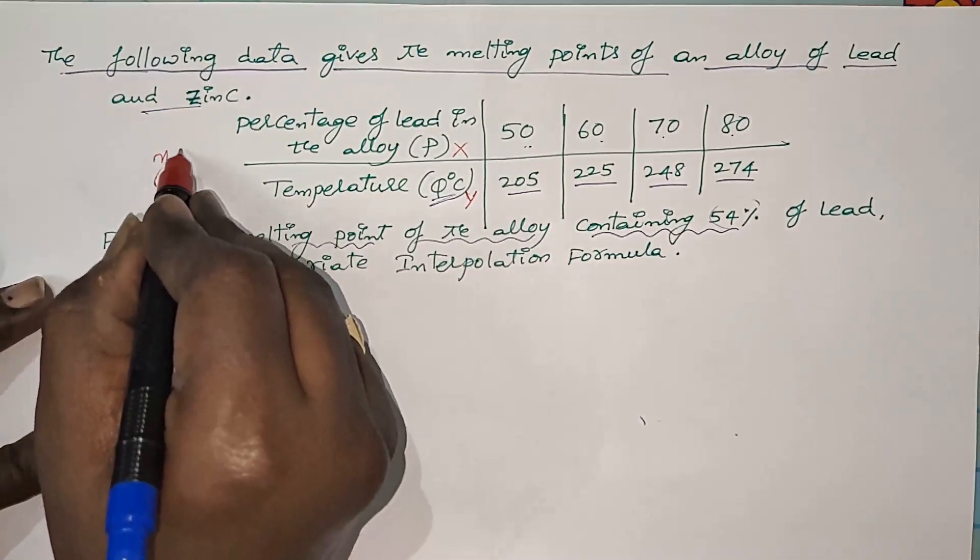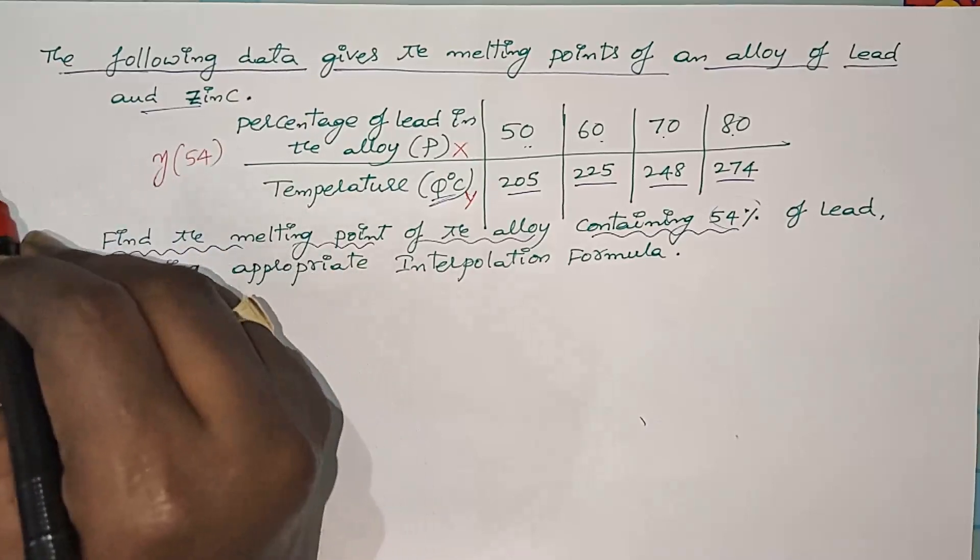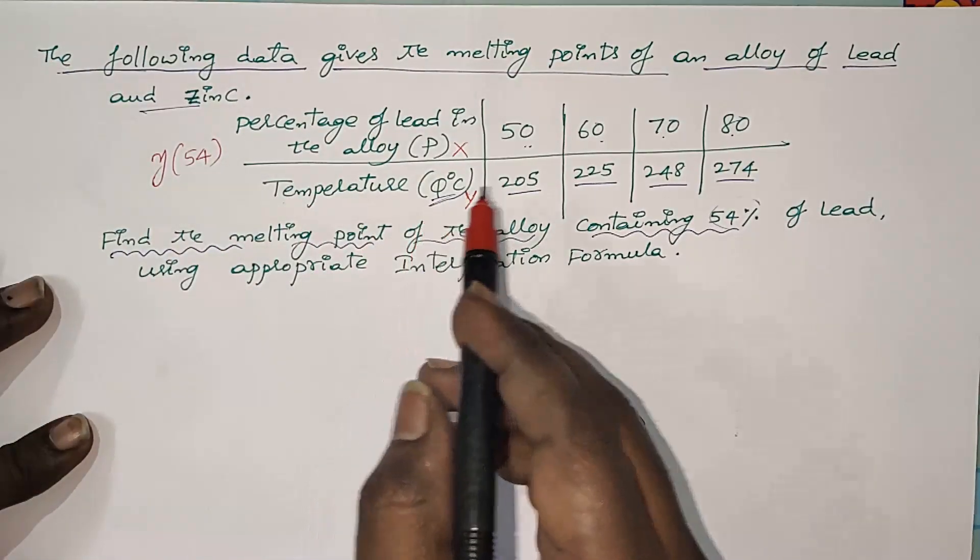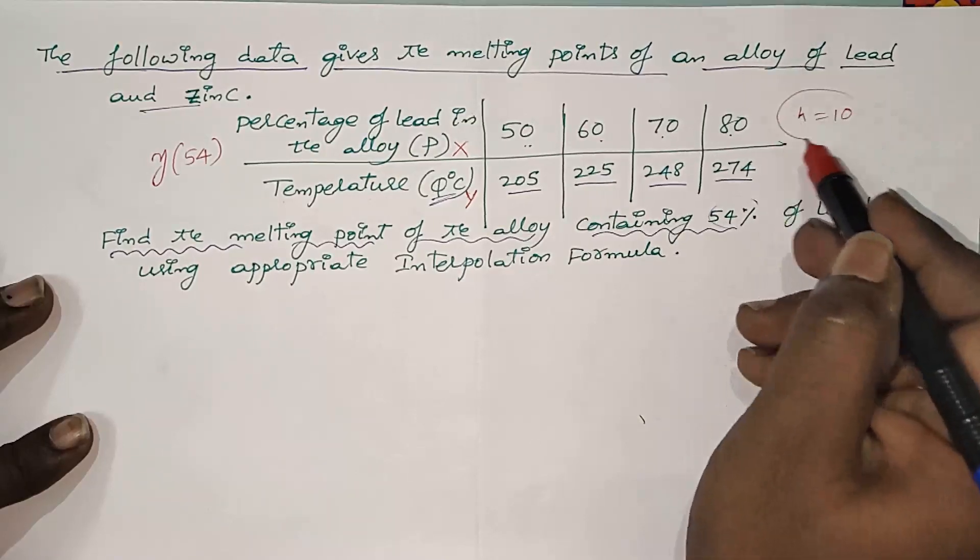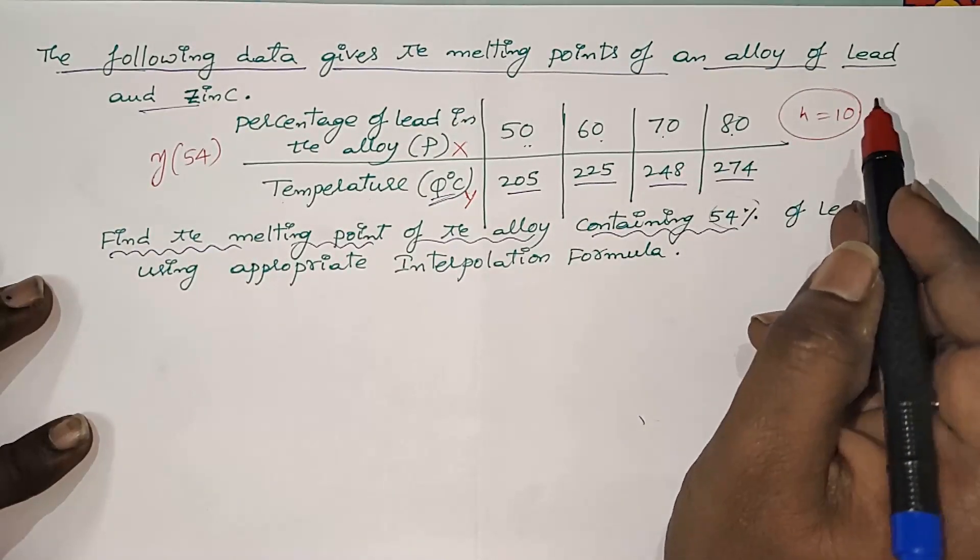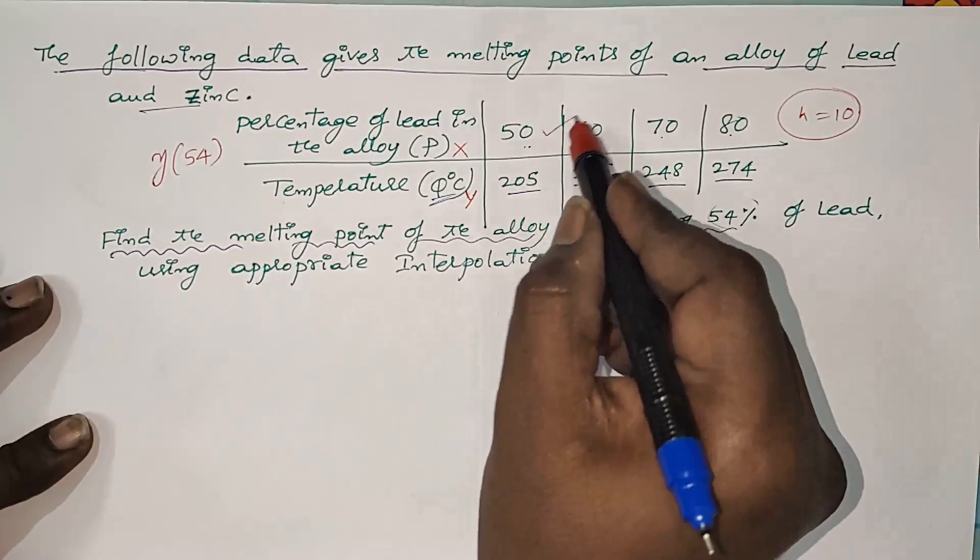Clearly we are observing that X values are separated by the equal difference 10, so the given data has equal parts and 54 lies at the starting of the data. That's why we can apply Newton's forward interpolation formula.